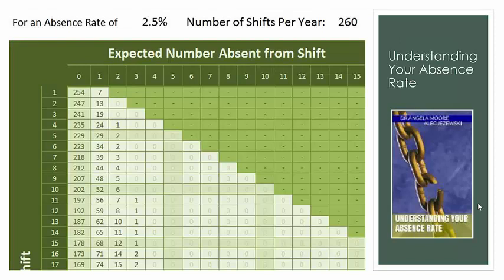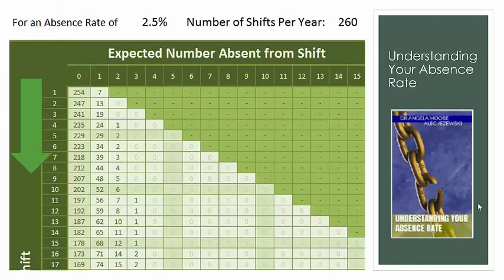Here is an extract of my book. Along the top is the expected number of people who will be absent each day. Down the side is the number of people scheduled to come in each day. Since the example has 15 in the office, we go down till we come to 15. This shows that on 178 days, no-one will be absent; on 68 days, we'd expect 1 person to be absent; on 12 days, 2 people will be absent; and on 1 day per year, we'd expect 3 people to be absent. We have now reduced the absence problem down to 4 scenarios, and we know how often each scenario is likely to occur.